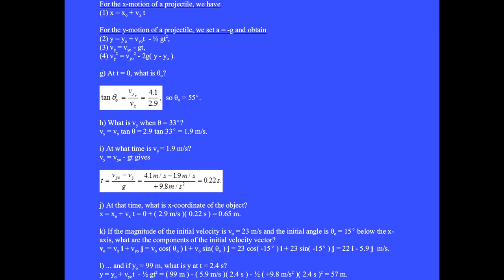We get v sub y equals 1.9 meters per second. Question I: At what time is v sub y equal to 1.9 meters per second? Using equation 3, v sub y equals v sub y 0 minus g t, which gives t equals (v sub y 0 minus v sub y) over g, and we get 0.22 seconds. Question J: At that time, what is the x coordinate of the object? Using equation 1, x equals x sub 0 plus v sub x t, we get 0.65 meters.